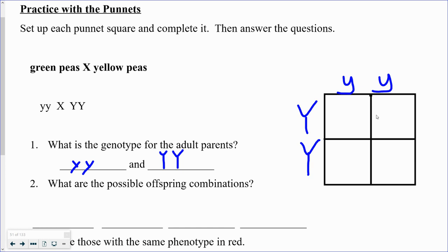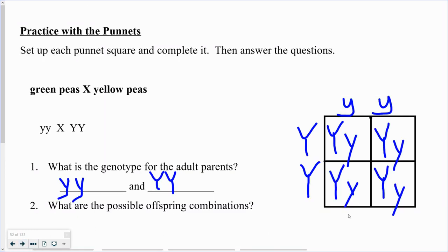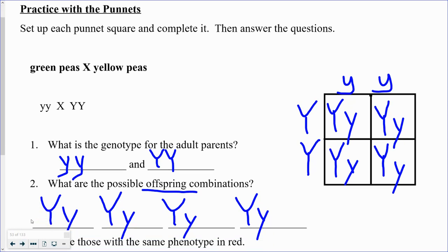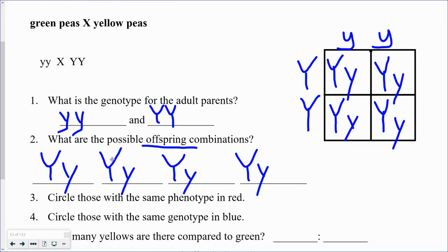Each of the remaining boxes also gets capital Y lowercase y. So it just happens to be that when you breed green peas with this yellow pea parent who is homozygous dominant, all the offspring come out the same — every box is capital Y lowercase y.